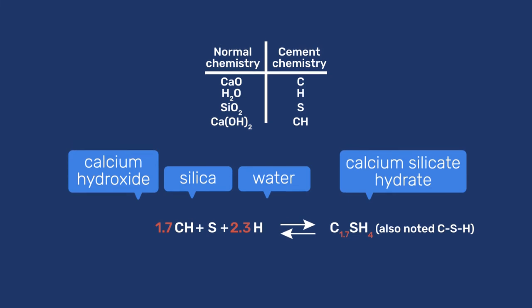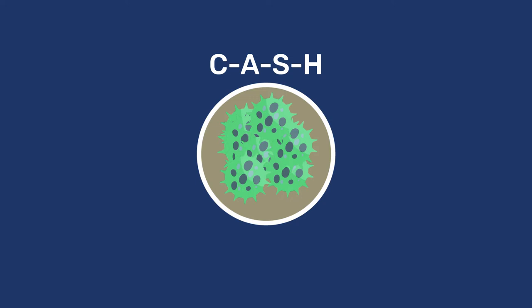In the more general case, aluminates will also be incorporated into this hydrate, which is then a calcium aluminum silicate hydrate noted C-A-S-H, where A stands for Al2O3.